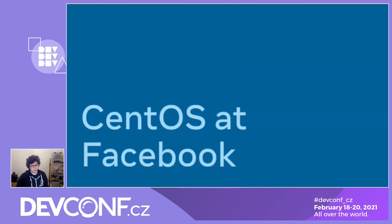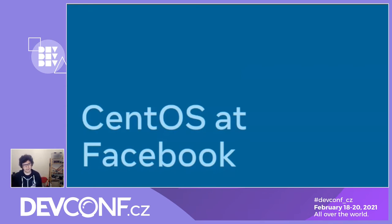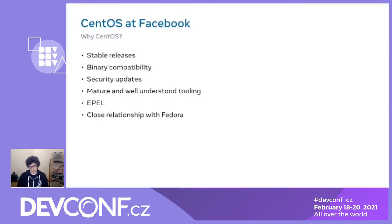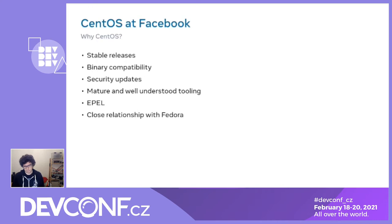Before we talk about CentOS specifically, let's talk about why we actually run CentOS. I've been at Facebook since 2012; at the time we were running CentOS 5, and now we're running CentOS Stream 8. CentOS gives us stable releases — a stable base that is known to work, well tested and gated. This is true for both CentOS Linux and CentOS Stream because they have effectively the same gating.